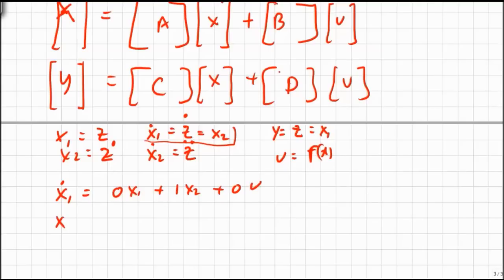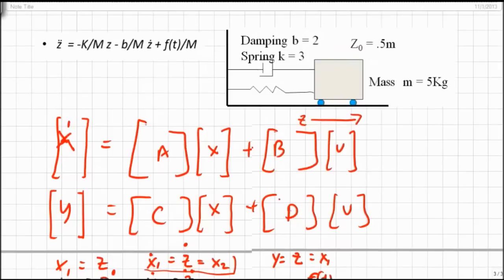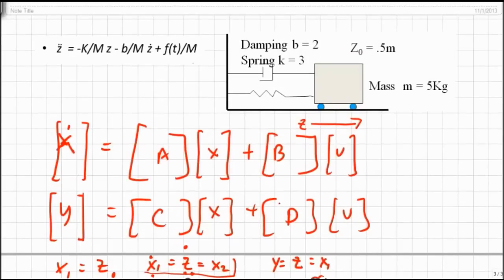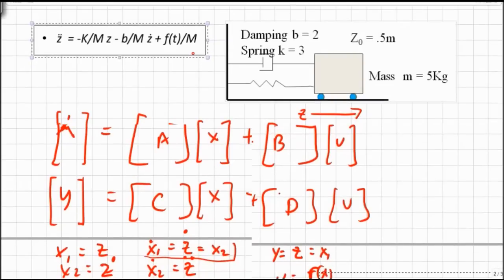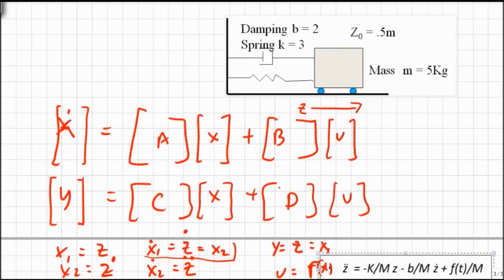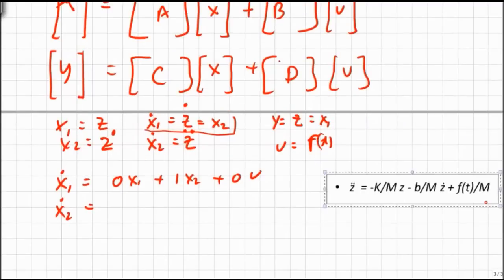And X2 dot, which is Z double dot, equals, well, if I go back to my equation up here, let me just drag that down, down, down, down. Drag it down here for reference.